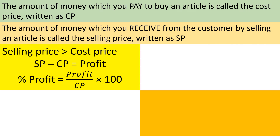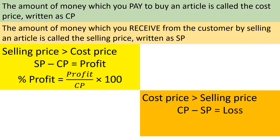If cost price is greater than selling price, then there is a loss. The formula for loss is cost price minus selling price. We can find percent loss also — that equals loss divided by cost price, multiplied by 100. Always remember: profit or loss percent is always calculated on cost price.